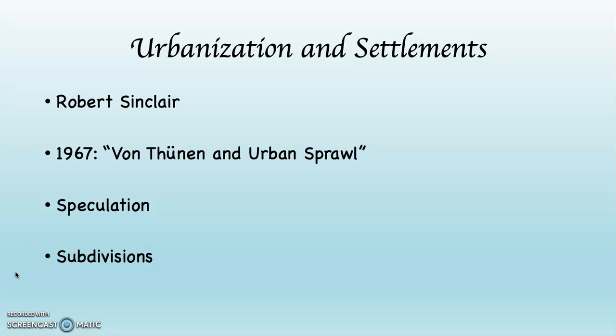Subdividing, or a subdivision, happens when a larger tract of land is purchased by a developer, who then breaks that larger parcel into smaller parcels of property, builds houses and/or apartments or condominiums, and installs infrastructure like streets, electricity, water, sewage, and gas — and perhaps recreational land like a park, depending on the requirements of urban planners. That developer then sells each of these lots, parcels, houses, apartments, and condos to individual buyers.